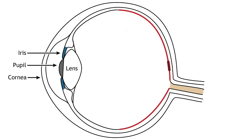The pupil is the opening in the iris that allows light to enter the eye. The iris is the colored portion of the eye that surrounds the pupil and, along with local muscles, can control the size of the pupil to allow for an appropriate amount of light to enter the eye.